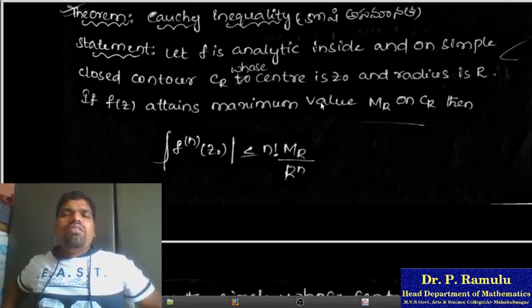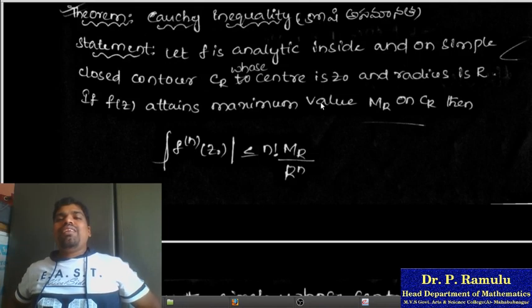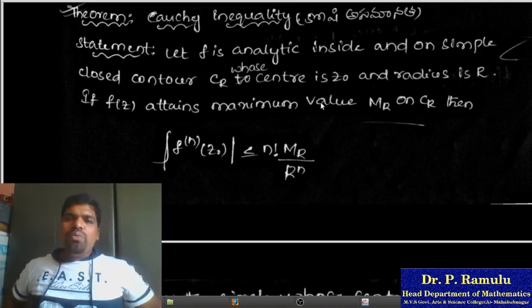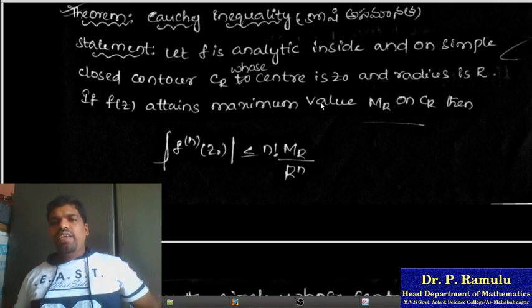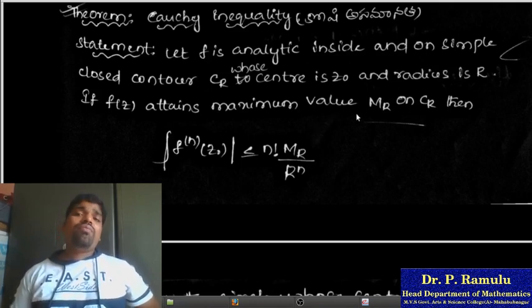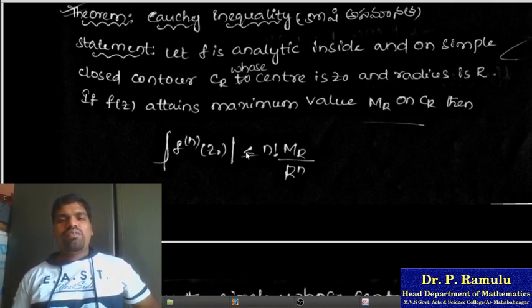Now Cauchy's inequality — this is very important for examination. Statement: Let f be analytic inside and on a simple closed contour C_r, whose center is z₀ and radius is r. If f(z) attains maximum value M on C_r, then the nth derivative satisfies: |f^(n)(z₀)| ≤ n! × M / r^n.